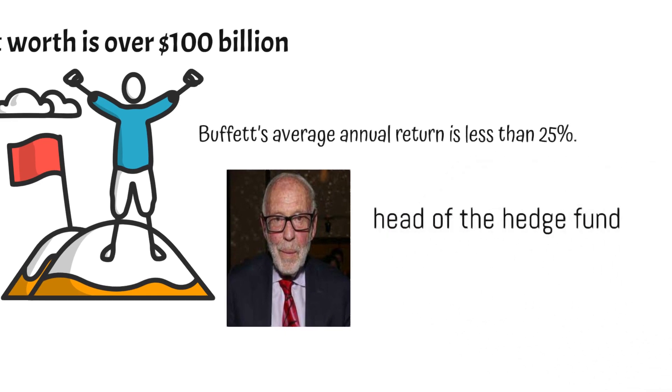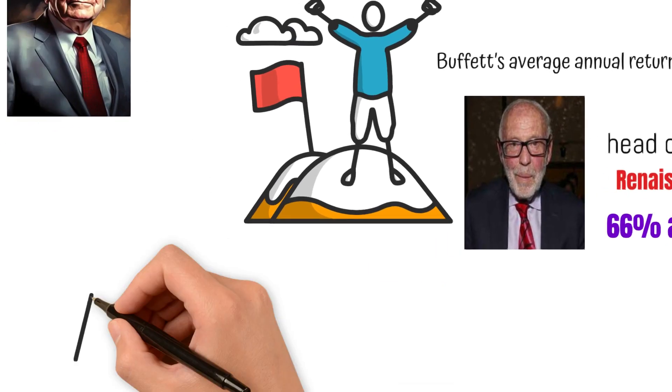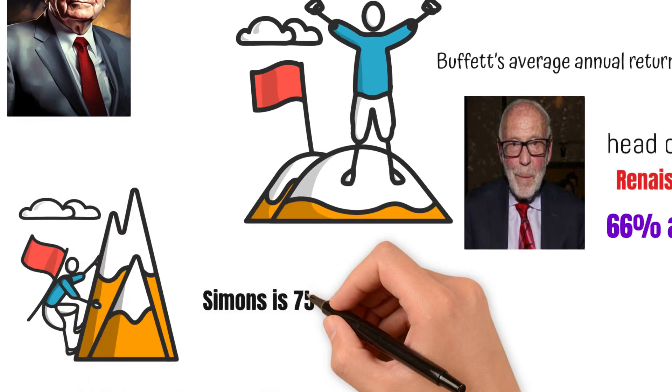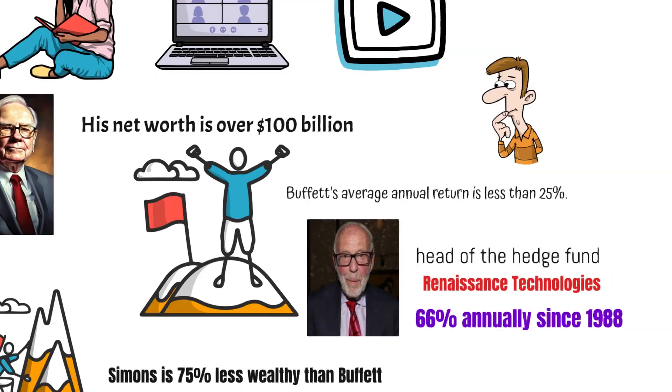Jim Simons, head of the hedge fund Renaissance Technologies, has compounded money at 66% annually since 1988. No one comes close to this record. Yet Simons is 75% less wealthy than Buffett. What is the reason for this difference?